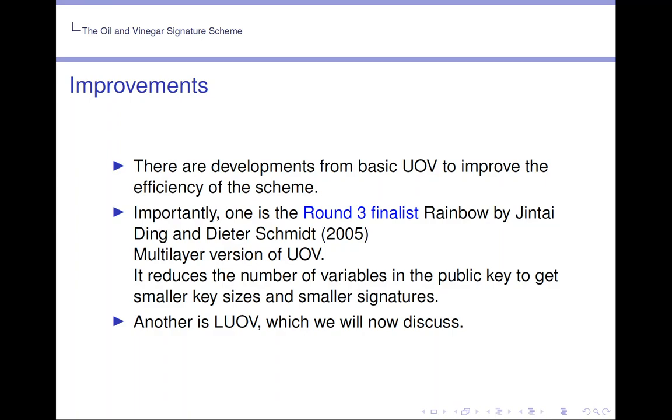Importantly, one is the Round 3 finalist Rainbow by Jintai Ding and Dieter Schmidt in 2005. It's a multi-layer version of UOV and it reduces the number of variables in the public key to get smaller key sizes and smaller signatures. Another is LUOV, which we will now discuss.